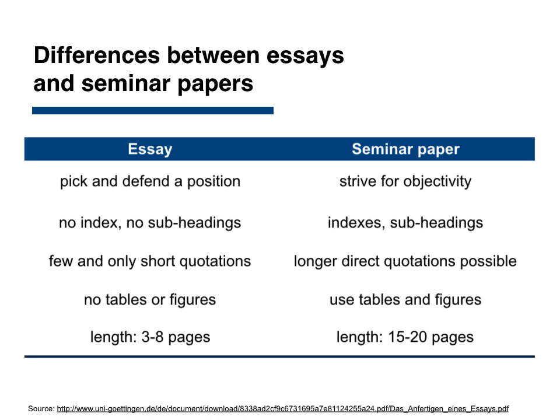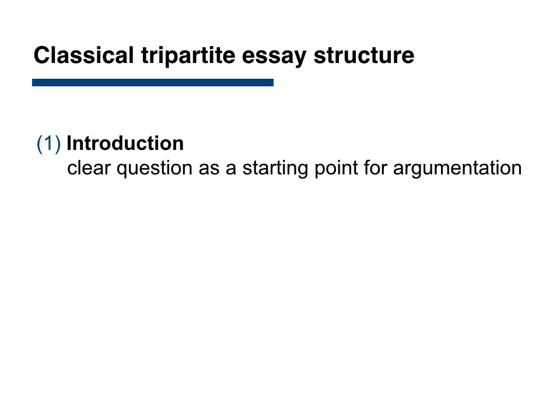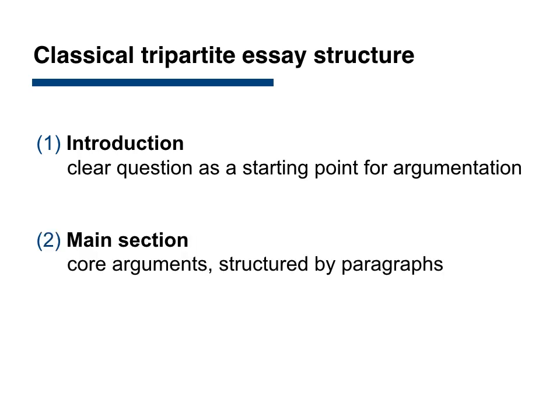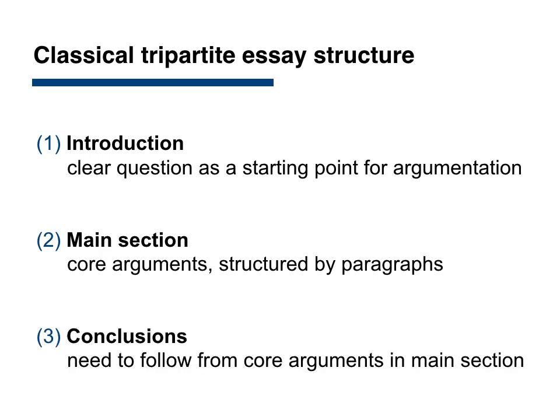So how do you structure the essay if there's no index and no subheadings? The classical tripartite essay structure has an introduction that poses a clear question or a starting point for argumentation, followed by the main section which presents the core arguments and is structured by paragraphs. Actually, the whole essay is mostly structured by paragraphs, and paragraphing is the most important craft within an essay. Then a brief, short conclusion part in the end that needs to follow from the core arguments in the main section but also refers back to the question or thesis — the starting point in the introduction.